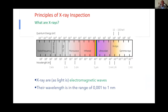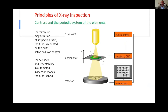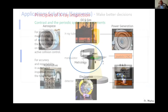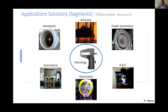As we all know, X-ray inspection involves wavelengths and quantum energy, and we work across different electromagnetic waves from different wavelengths — between microwave, infrared, ultraviolet, X-ray, and gamma ray. X-ray tubes are controlled by different manipulators connected to certain detectors, and different applications and segments can benefit from practical digital radiography — like aerospace, oil and gas, power generation, R&D, electronics, and automotive.